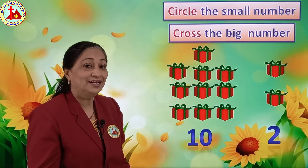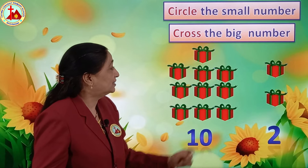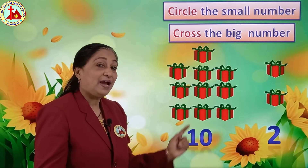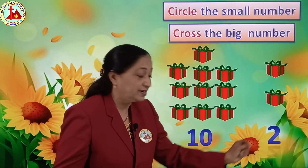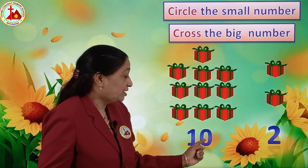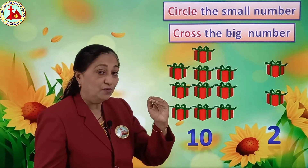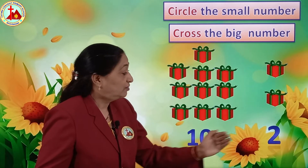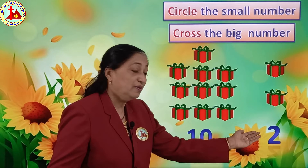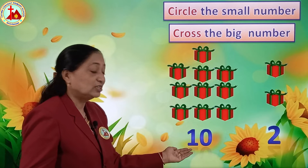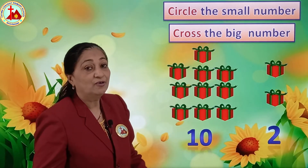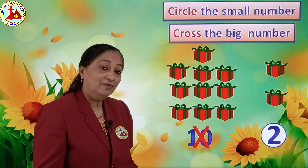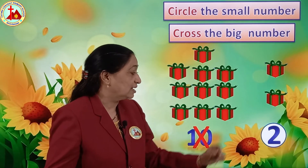See beautiful gifts. See so many gift packets - 1, 2, 3, 4, 5, 6, 7, 8, 9, 10. So here there are 10 gift packets. And here only 2 are there. So now 2 comes before 10 - we say 1, 2 - and then 10 comes still after 3, 4, 5, 6, 7, 8, 9, 10. So it comes much more after. So 2 is before 10, and before numbers are always the smaller numbers. So again we are going to circle the small number 2 and cross the big number 10.